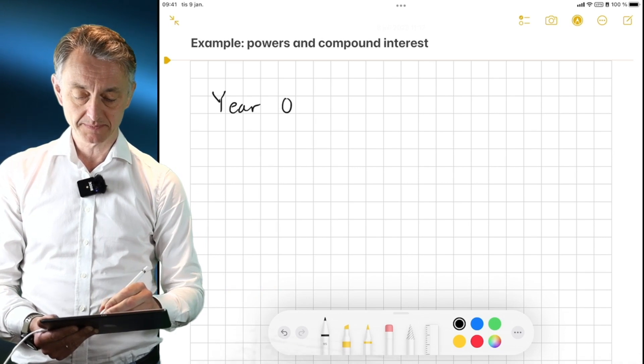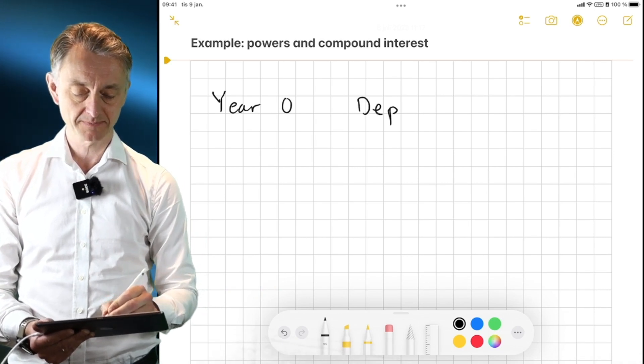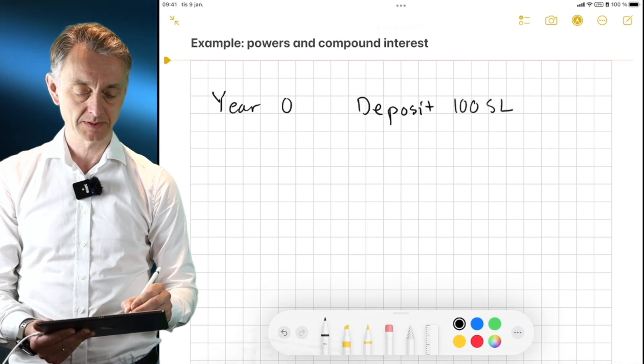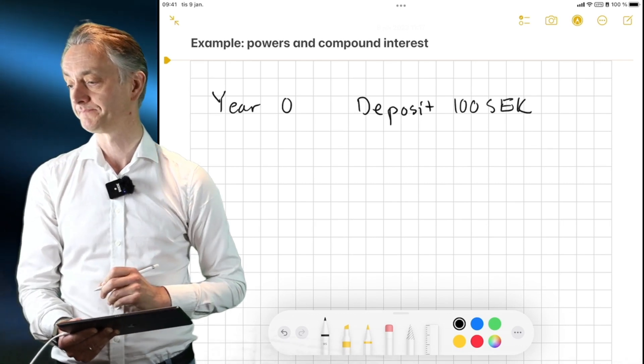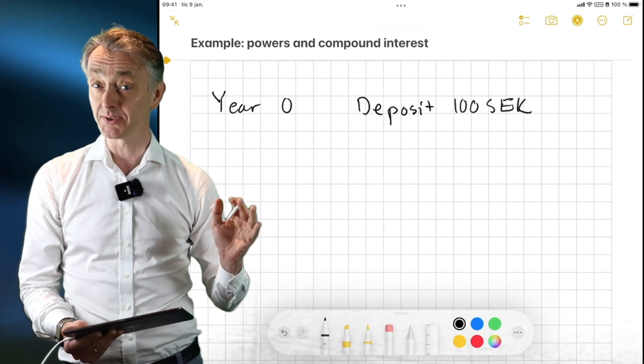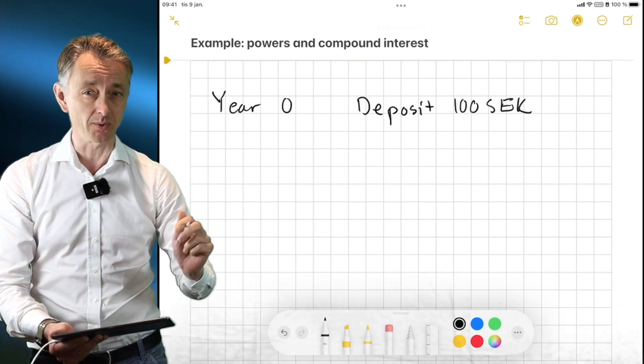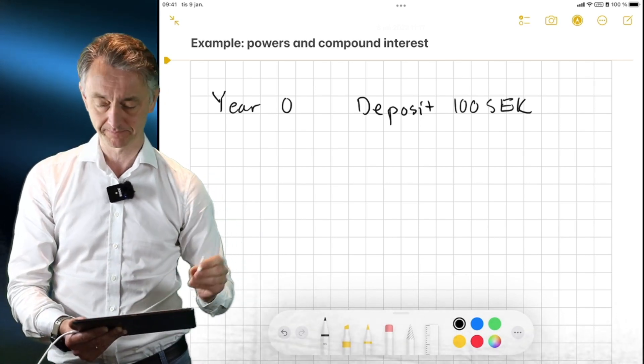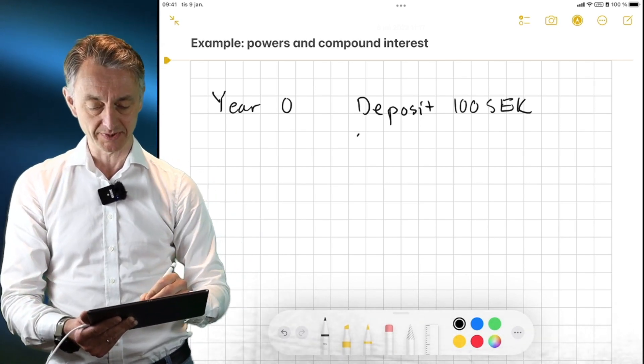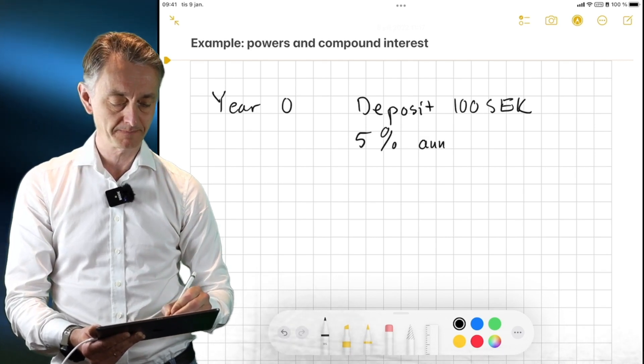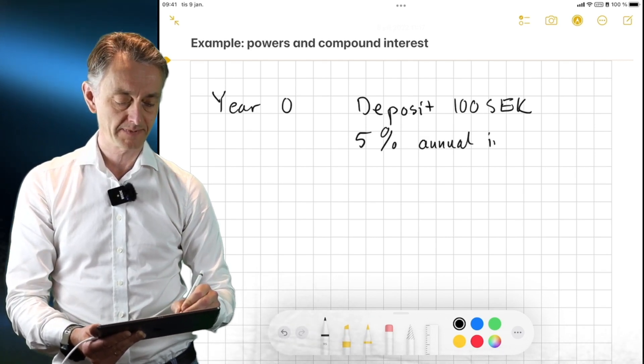So then I deposit 100 kroner in the bank. And also to my great joy, they say we will give you an interest rate of 5% annually. Okay, that's very good. 5% annual interest.